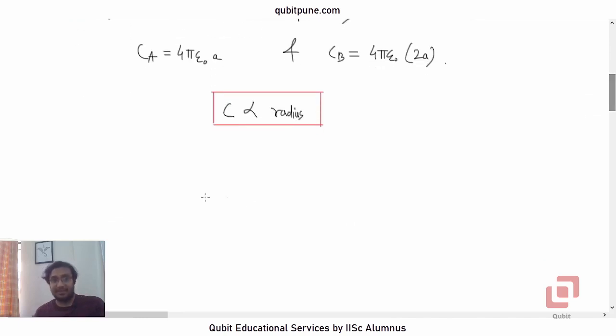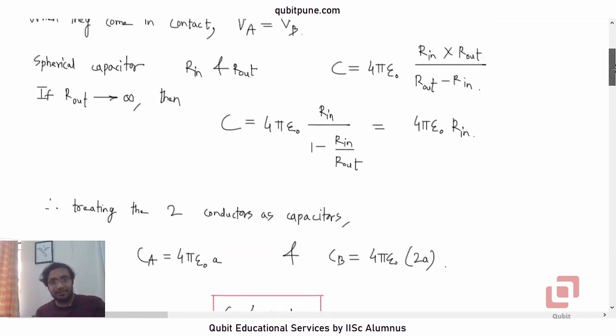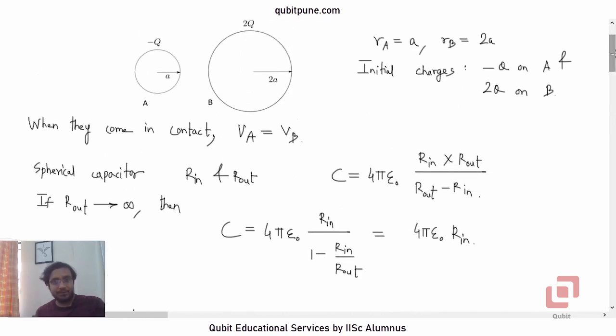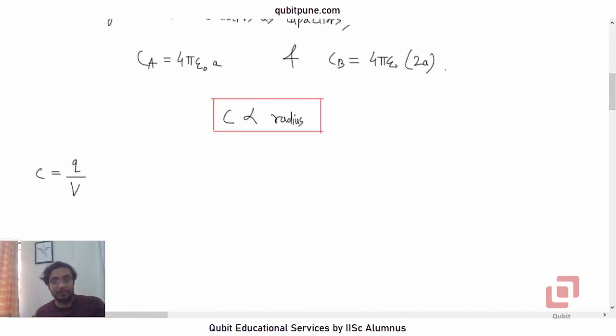Now we also know this: by definition, C is equal to Q by V. By definition, C is equal to Q/V. Now we have said that when they come in contact with each other, we have said that when they come in contact with each other, VA becomes equal to VB.